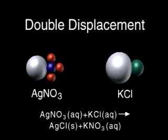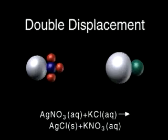In a double displacement reaction, the positive and negative portions of two ionic compounds interchange.